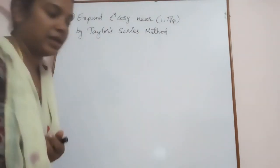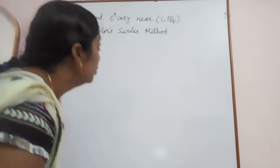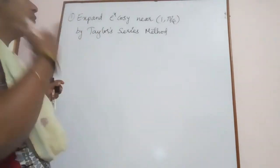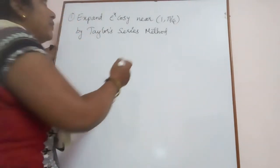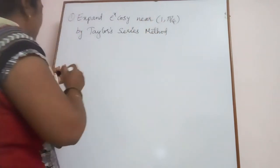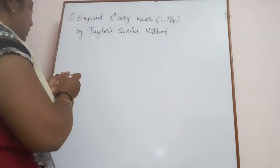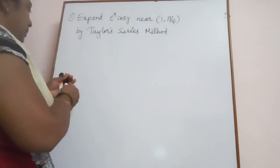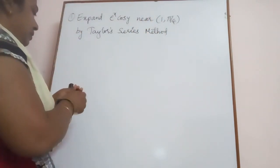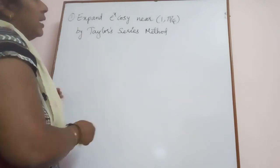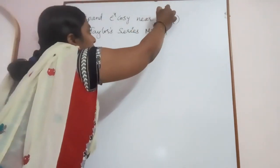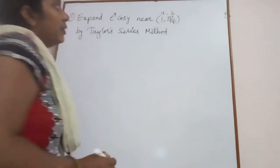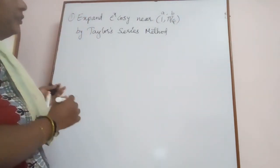In this case we are using note 2. In note 2, the function f(x, y) is defined at a particular point (a, b), where here a is 1 and b is π/4.